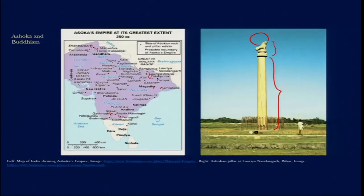That is why this particular wheel became a very important symbol in Buddhist art and architecture, and Ashoka appropriated the wheel of law because his edicts and pillars carry inscriptions speaking about the righteous path for all citizens and people inhabiting his kingdom.